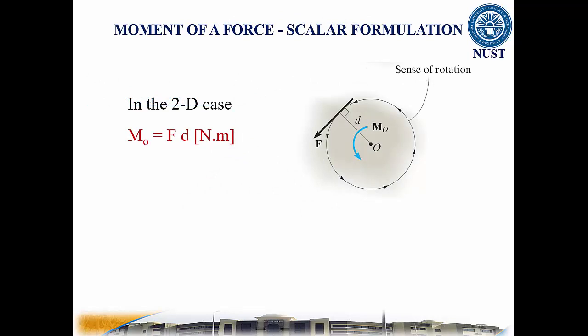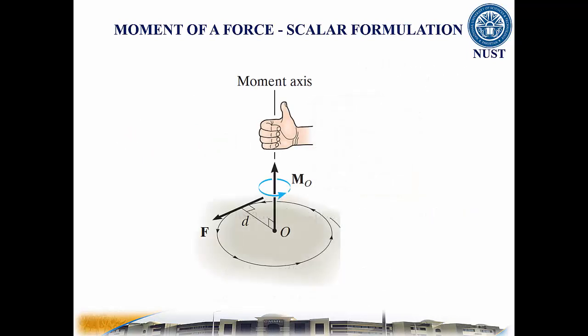Now consider the force F and point O which lie in the shaded plane. The moment about point O or about an axis passing through O and perpendicular to the plane is a vector quantity since it has specified magnitude and direction. The magnitude of this quantity is the force times moment arm. Its unit is Newton meter.